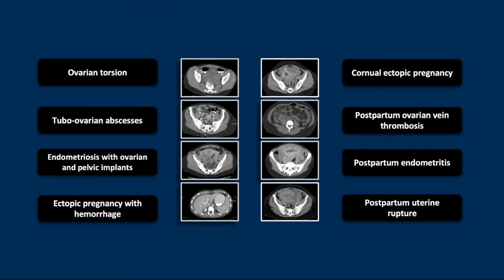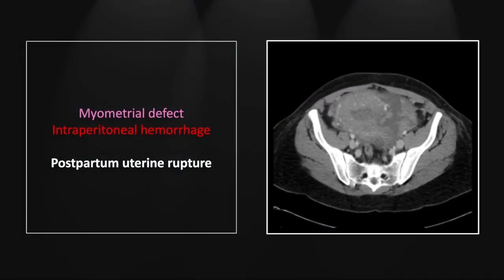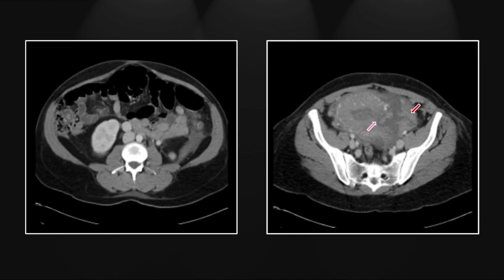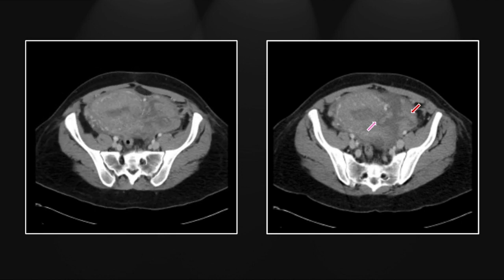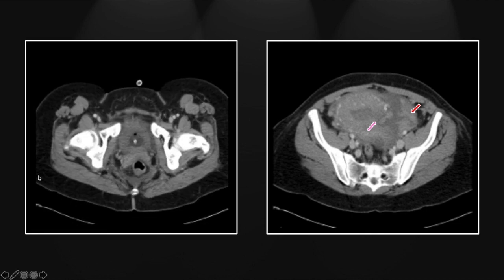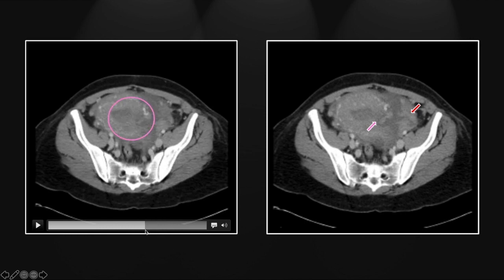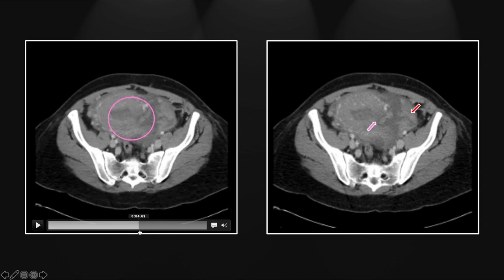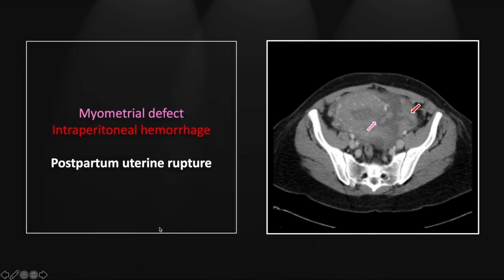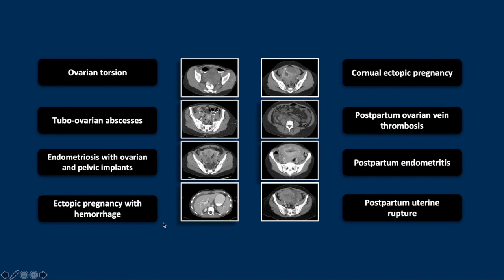Our last case is another postpartum complication — a uterine rupture. There is a large defect in the myometrium here in the lower uterine segment with associated clot and hyperdense fluid within the pelvis. So pretty clearly, a postpartum uterine rupture with pronounced associated hemorrhage. And that concludes this session on Obstetric Gynecologic Emergencies.